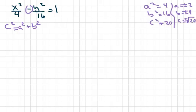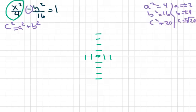So a is plus or minus 2, b is plus or minus 4, and c is plus or minus the square root of 20, which is between 4 and 5. My center is (0, 0) since there's no h or k. On x I go over 2, on y I go up 4 and down 4. Since the first term has x in it, the hyperbola opens left and right.